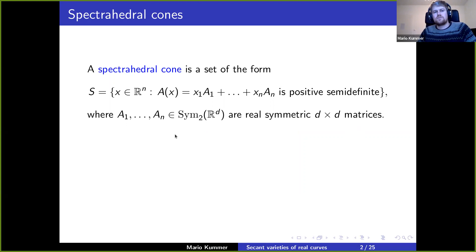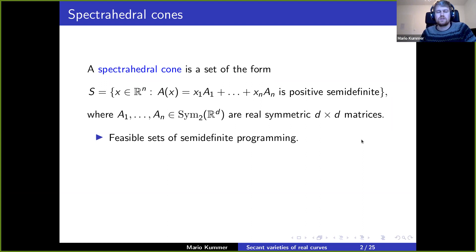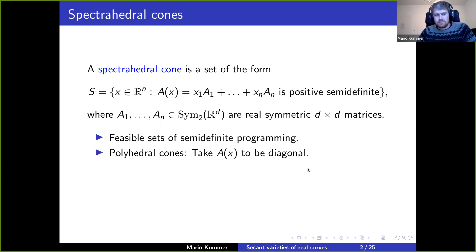The motivation today comes from optimization. We look at spectrahedral cones. A spectrahedral cone is a set that can be described by a so-called linear matrix inequality: you have some real symmetric d-by-d matrices, and you look at all points in R^n such that the corresponding linear combination of these matrices is positive semi-definite. These convex sets are the feasible sets of semi-definite programming. This class contains the polyhedral cones — if you take diagonal matrices, the condition implies all diagonal entries are non-negative, giving finitely many linear inequalities.